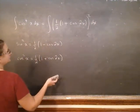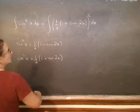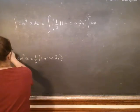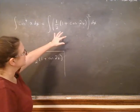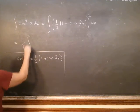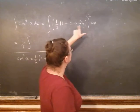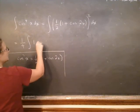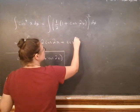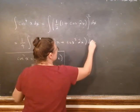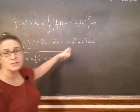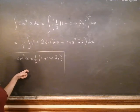When I work this out, I'm going to have a 1/4 that I'll pull in front of my integral. Then I've got (1 plus cosine 2x) squared, which expands to 1 plus 2 cosine 2x plus cosine squared 2x. I can integrate the first two terms, but I still have an extra cosine squared. So I have to use this half-angle formula again, which is why I left it on the board.